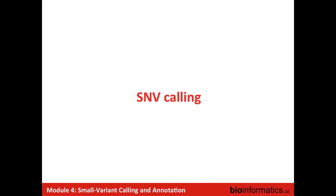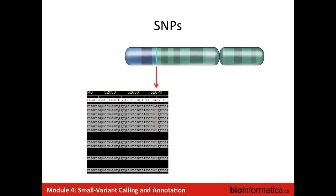So what is single nucleotide variant calling? It can be summarized simply: we have the reference genome and we try to find specific positions where we observe a different allele than what we have in the reference genome. It's as simple as that.